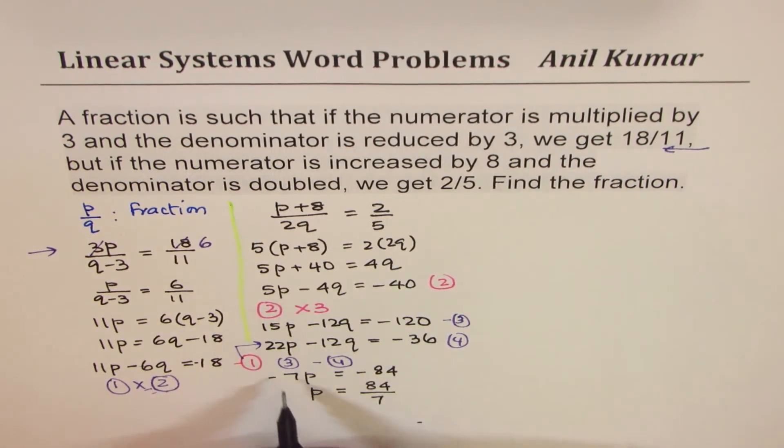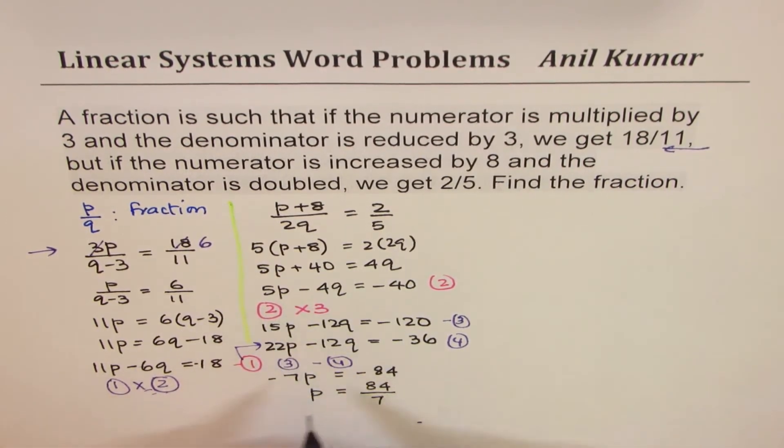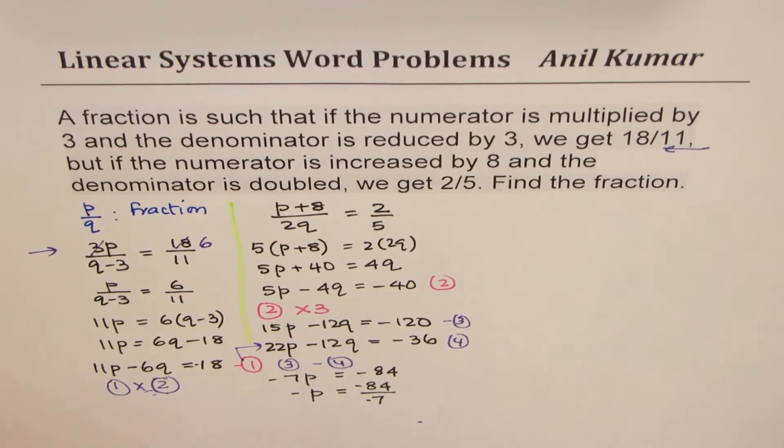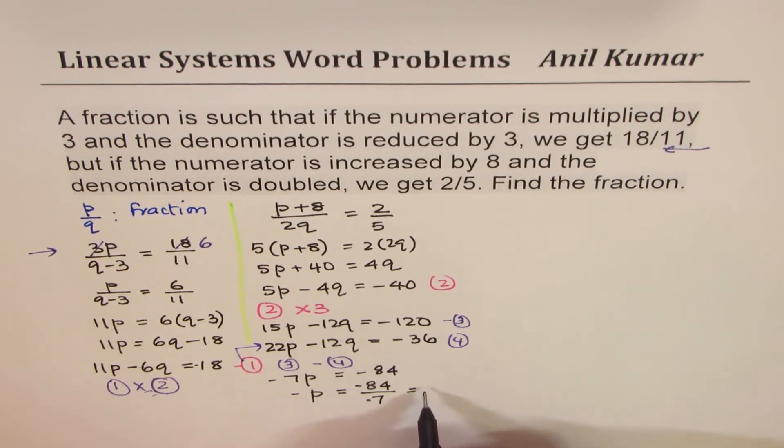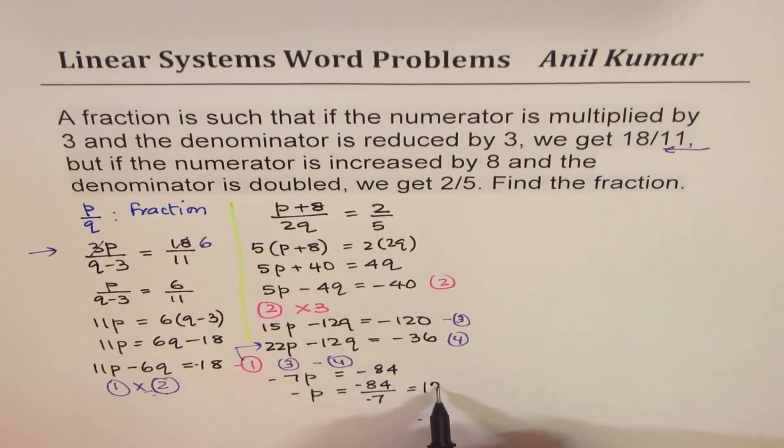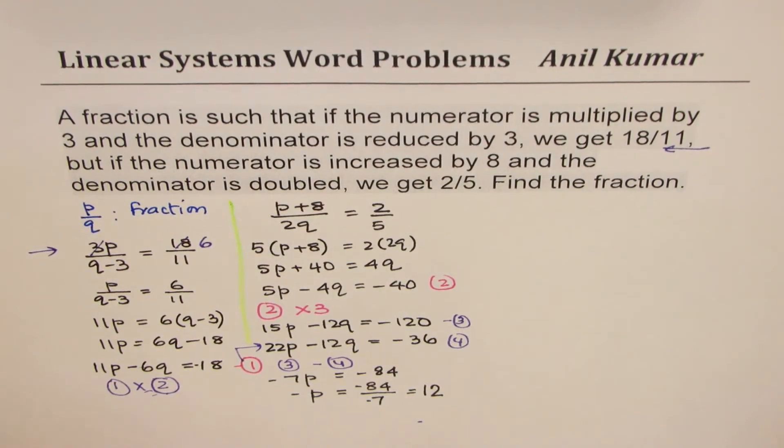When I did this, this is negative 7, 15 minus 22, negative p. So it is negative 84 divided by negative 7, which gives us a value which is positive, 7 times 12. So we get the value of p as 12.